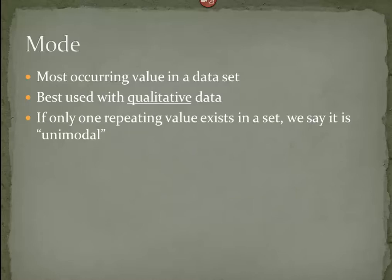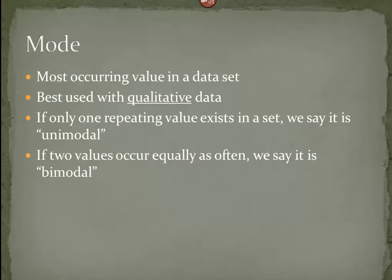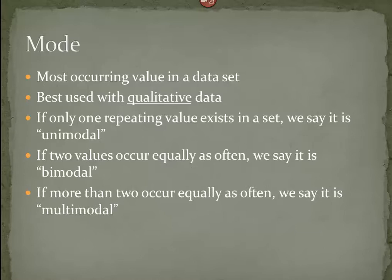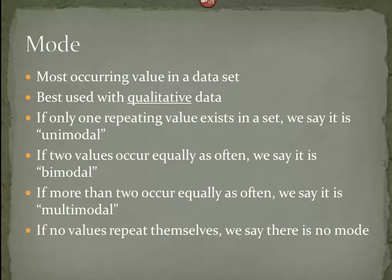Now, if we are dealing with numbers or non-numbers and one value occurs the most often, then we say that data set is unimodal. But if two categories or two sets of numbers occur the most often, we would have what we call a bimodal set of data. If more than two occur equally as often, then we say it's multimodal. And if nothing repeats itself, then we say there is no mode for that particular data set.